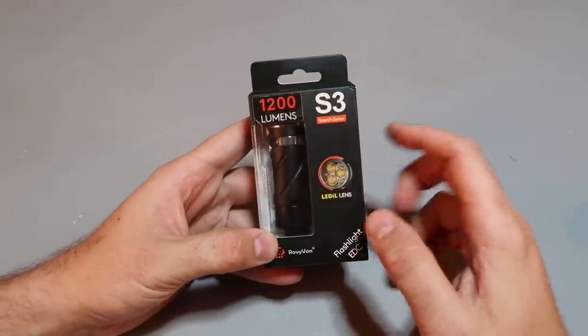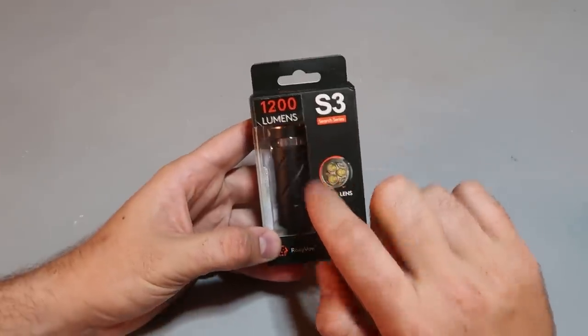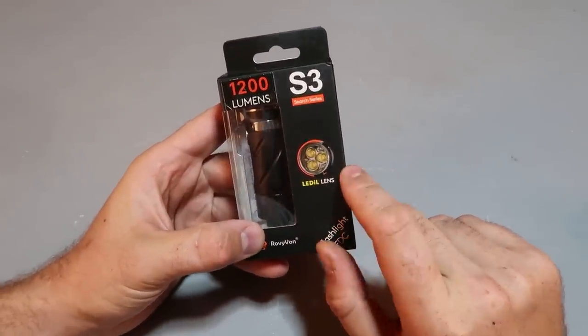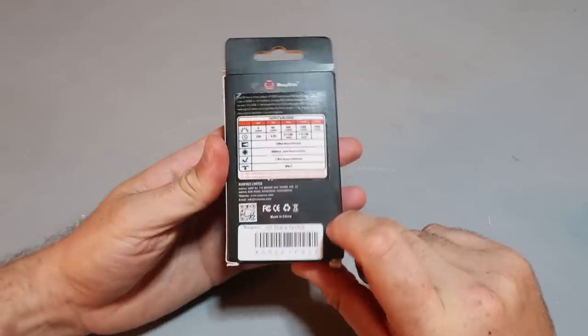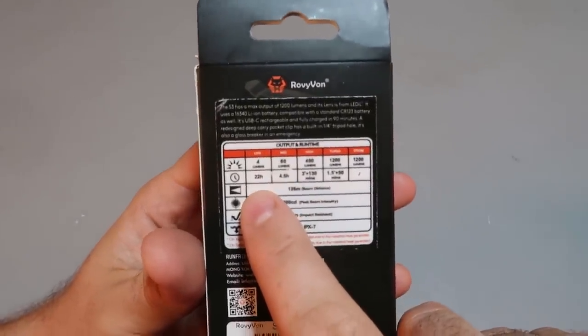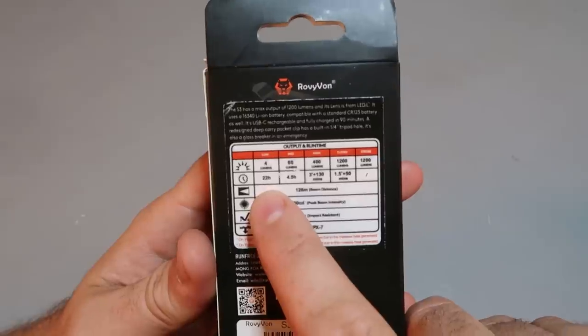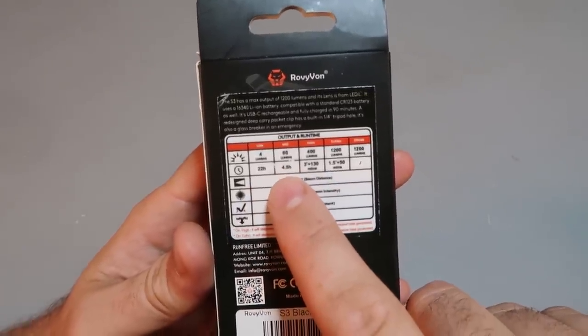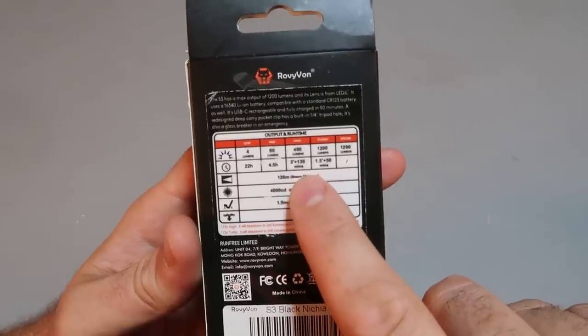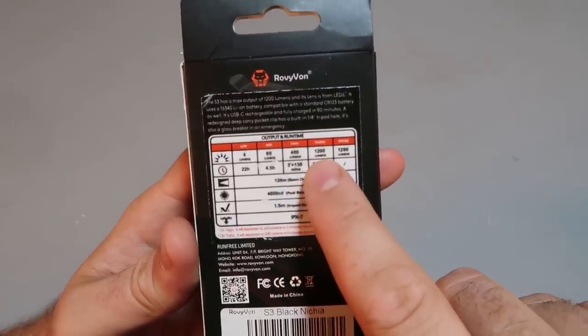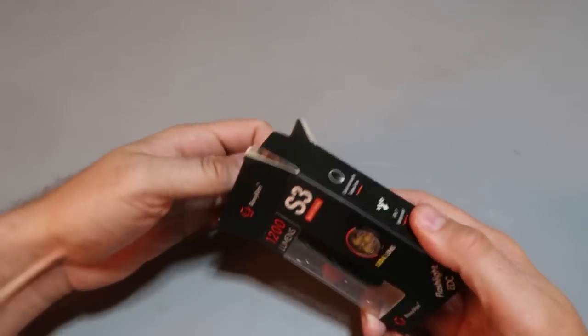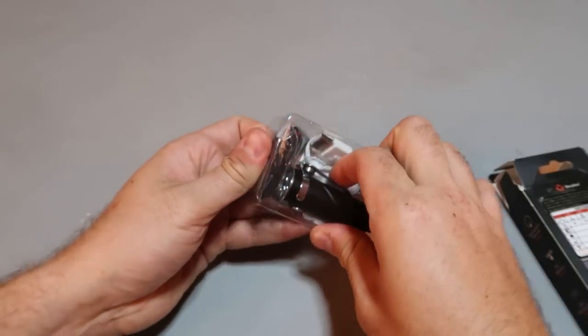Rovi One sent me a couple of flashlights. This one is 1200 lumens with an LED IL lens, the S3. Let's see what it's all about. I like how they show the modes: low is 4 lumens with 22 hours runtime, medium is 60 lumens for 4.5 hours, 400 lumens, and turbo will be 1200 lumens. Powerful battery for such a nice compact pocket flashlight.